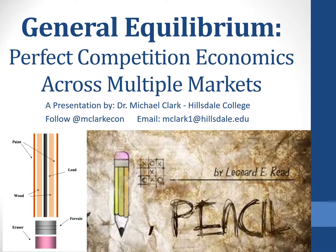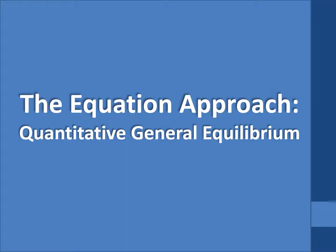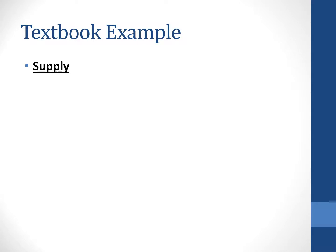In studying the general equilibrium model and thinking about perfect competition across multiple markets, there are multiple approaches we can take. One is the equation approach, using mathematics to look at the quantitative results of general equilibrium theory. We will keep the model fairly simple and look at only a couple of markets, but you get the essence of how markets interact. Let's look at the mathematical approach with a textbook example from the first edition of the Goolsby, Levitt, and Spireson Microeconomics textbook, page 568.